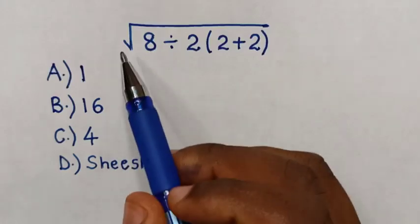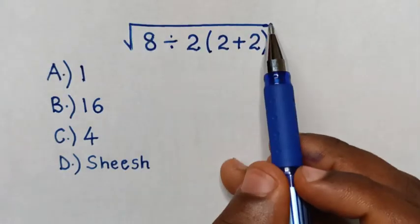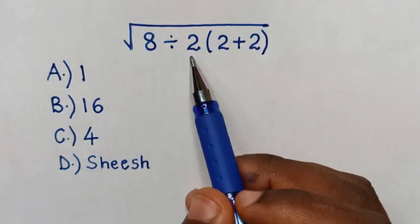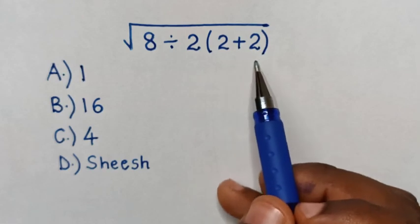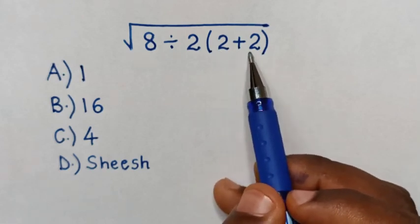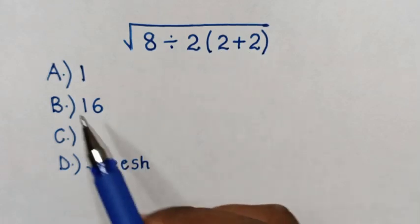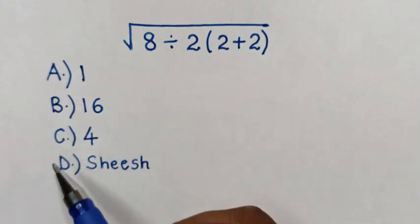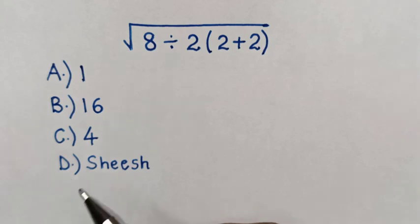Hello! How to solve square root of 8 divided by 2 bracket 2 plus 2, by selecting the answers in A, B, C or D.